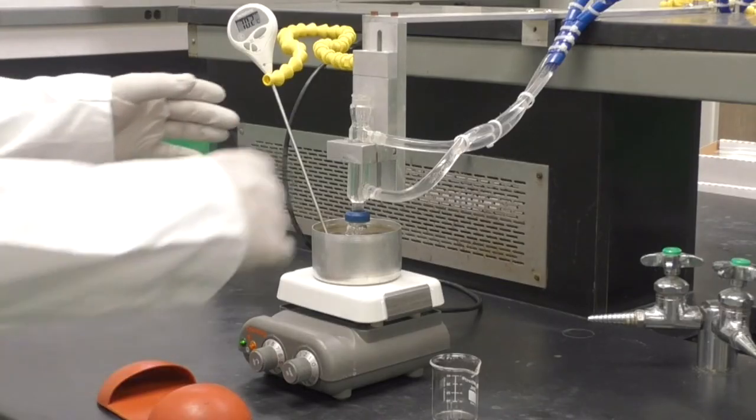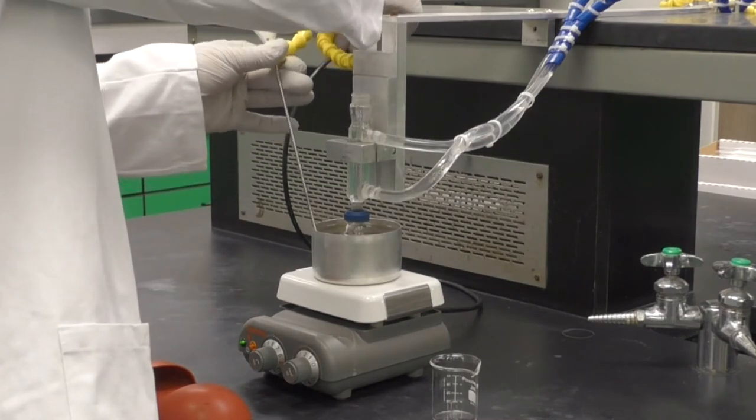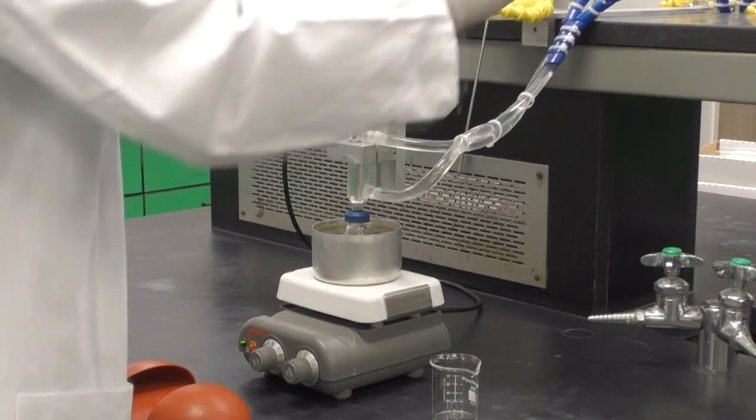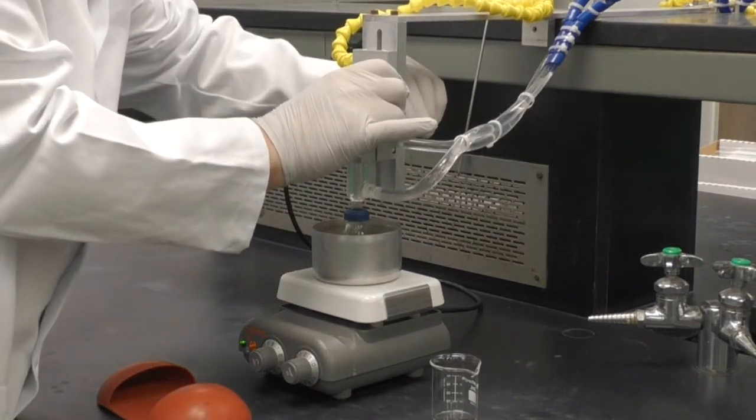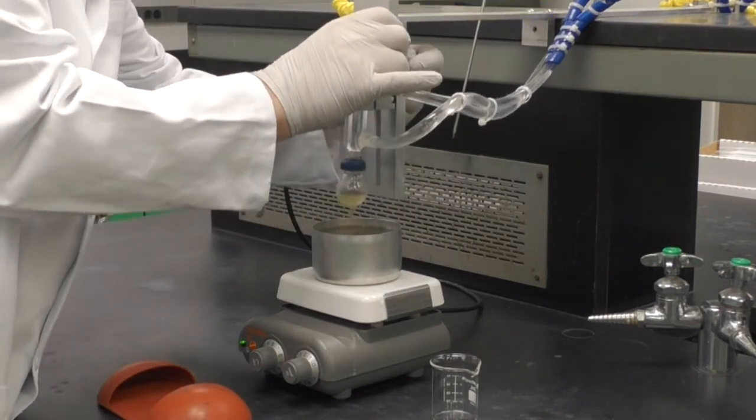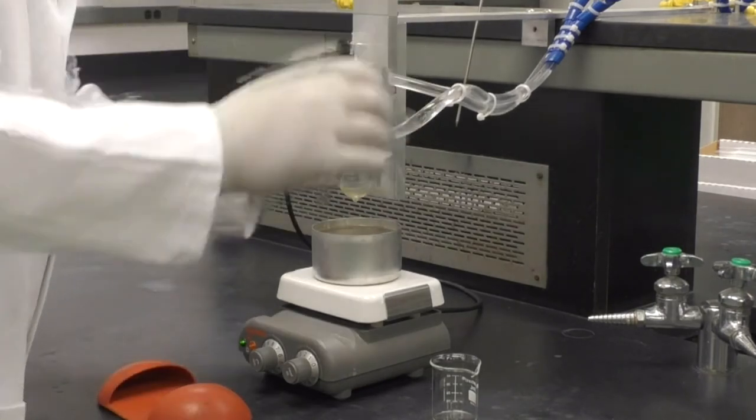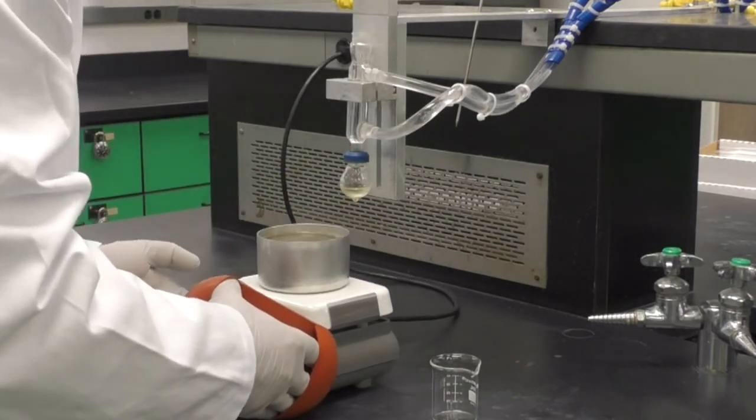After 15 minutes, turn off the heat, remove the thermometer, loosen the wing nut and raise the condenser and flask. Snug the wing nut to hold everything in position. Using hot hands, carefully remove the water bath.